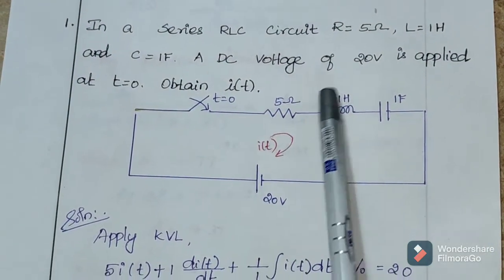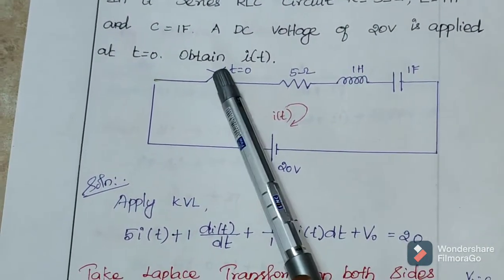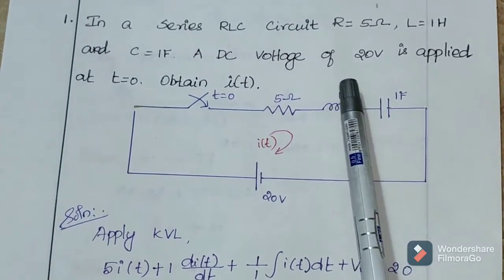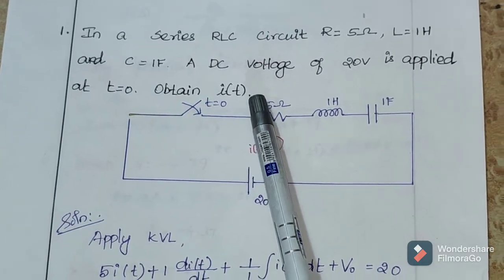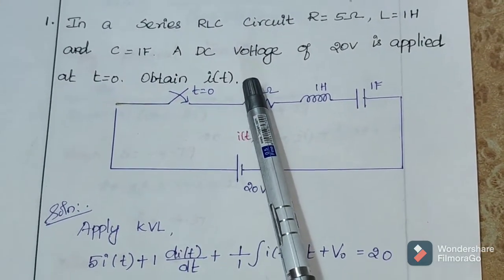Consider one problem. In a series RLC circuit, R is 5 ohms, L is 1H and C is 1F. A DC voltage of 20V is applied at t=0. Obtain I(t), the transient current.